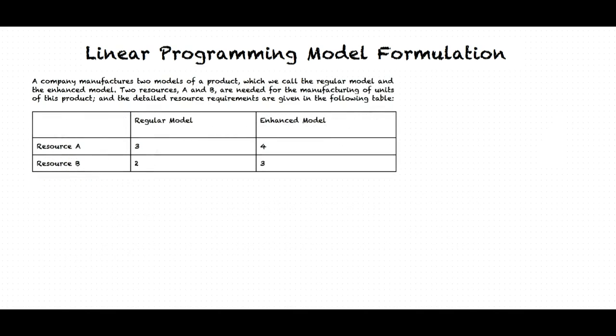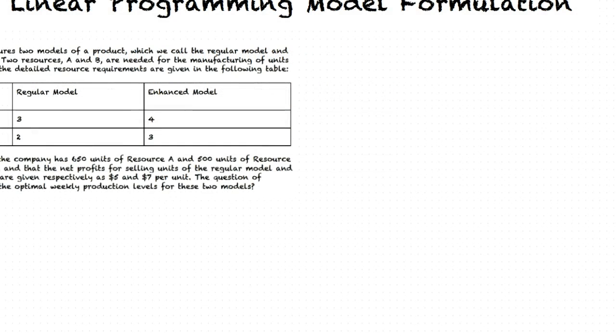A company manufactures two models of a product: the regular model and the enhanced model. Two resources, A and B, are needed for manufacturing, and the detailed resource requirements are given in the following table. Three units of resource A and two units of resource B are consumed per unit of the regular model. The resources could represent hours of labor, amounts of raw materials, or available electric power. The company has 650 units of resource A and 500 units of resource B available per week, and the net profits are $5 per unit for the regular model and $7 per unit for the enhanced model.